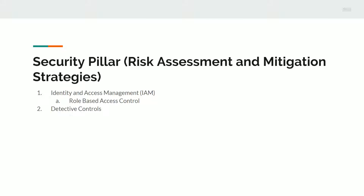Detective controls are a category of services and features within services that allow you to do some detective work in the event of security incidents. This mainly falls under logging, for example with CloudTrail or CloudWatch, as well as auditing. IAM ties in nicely with these controls.